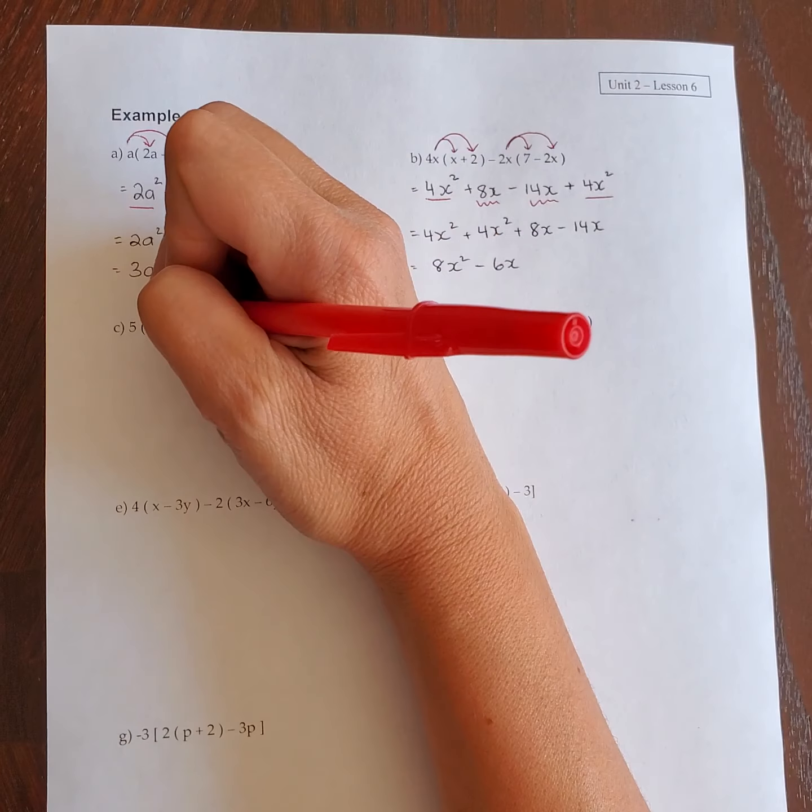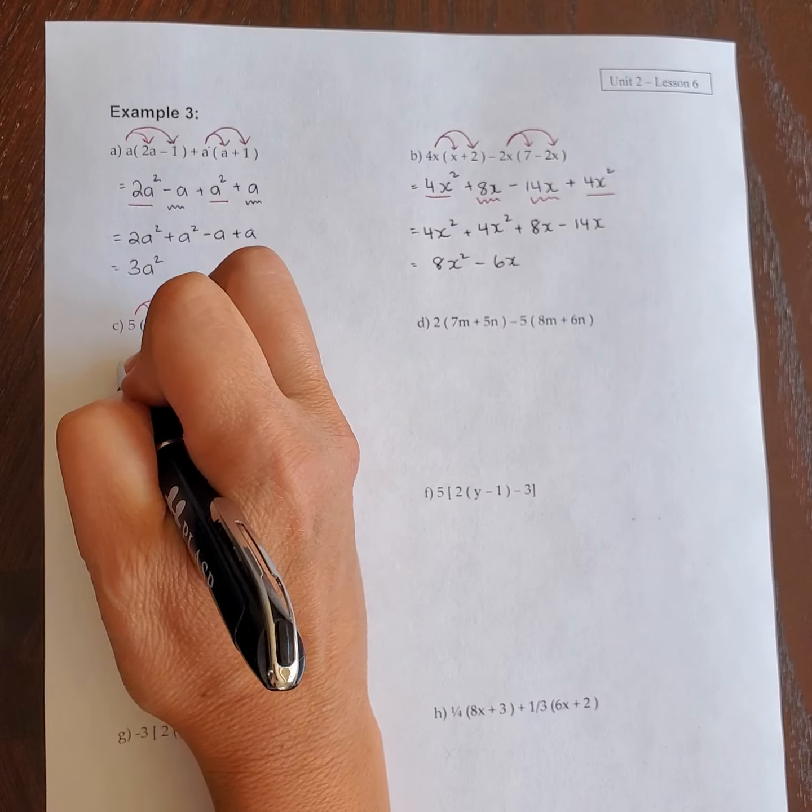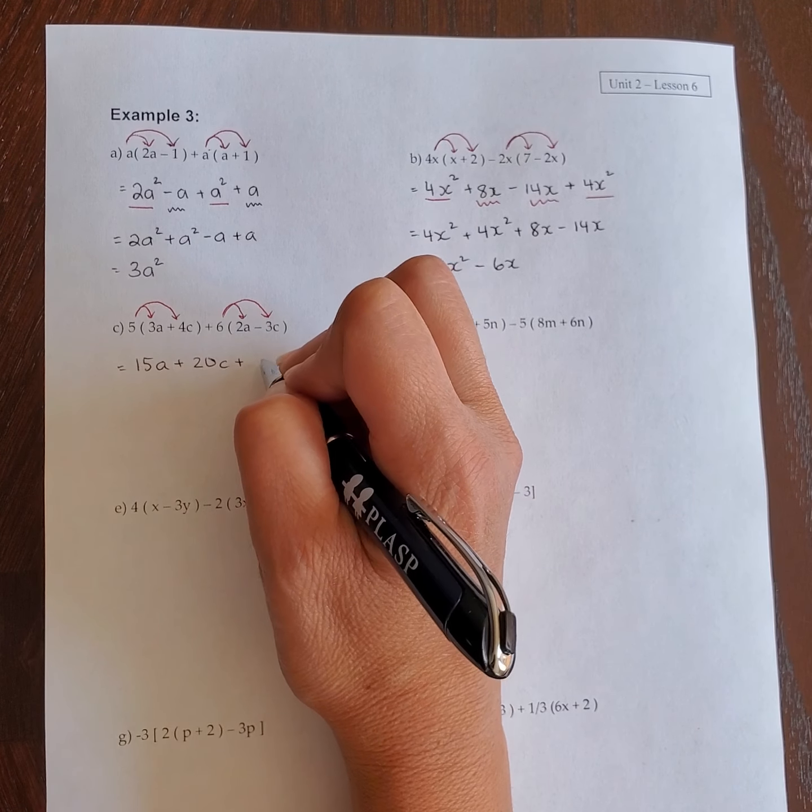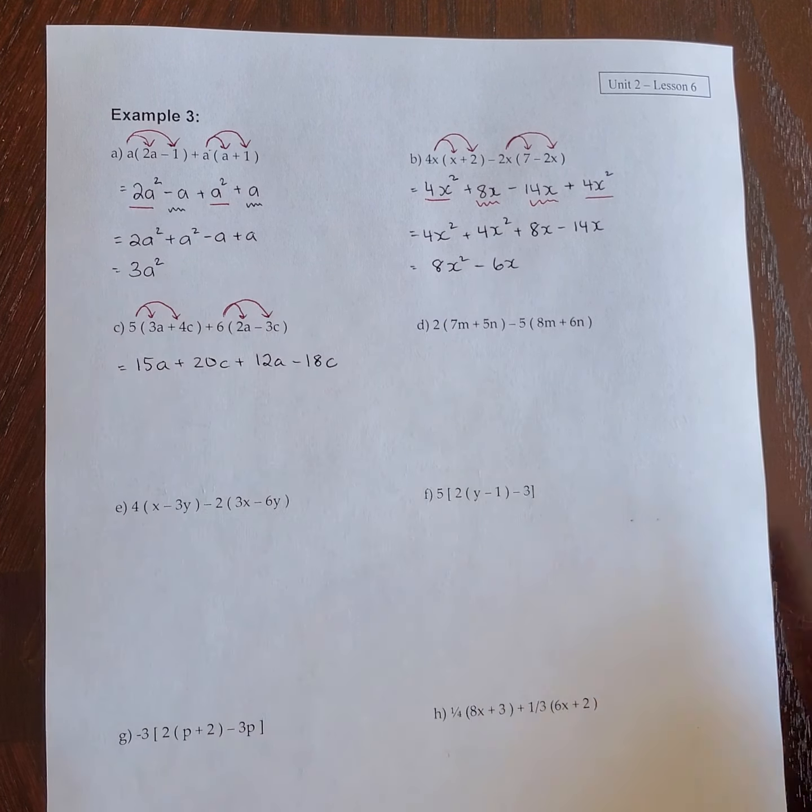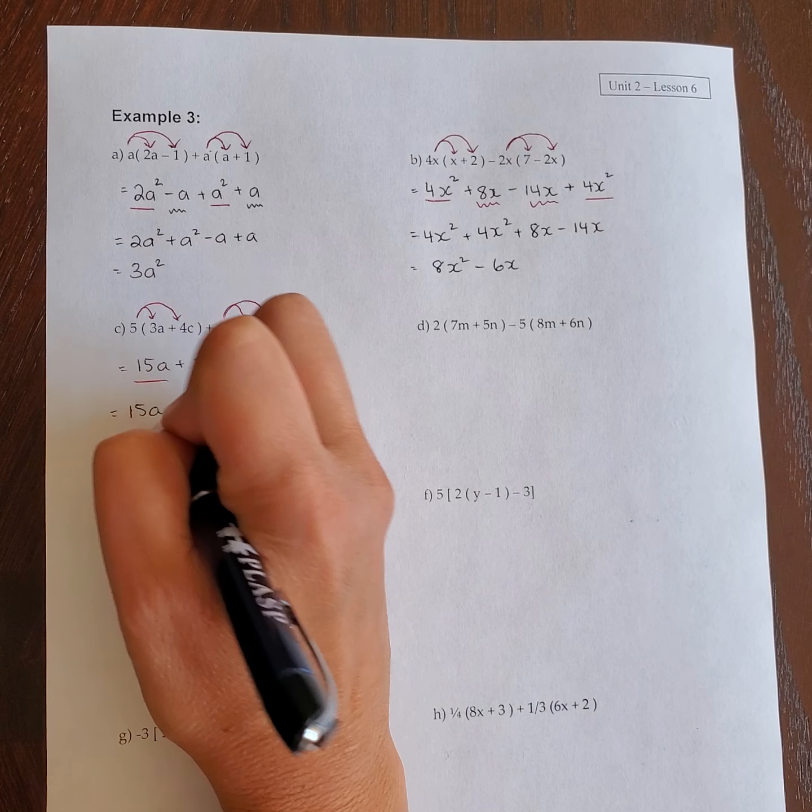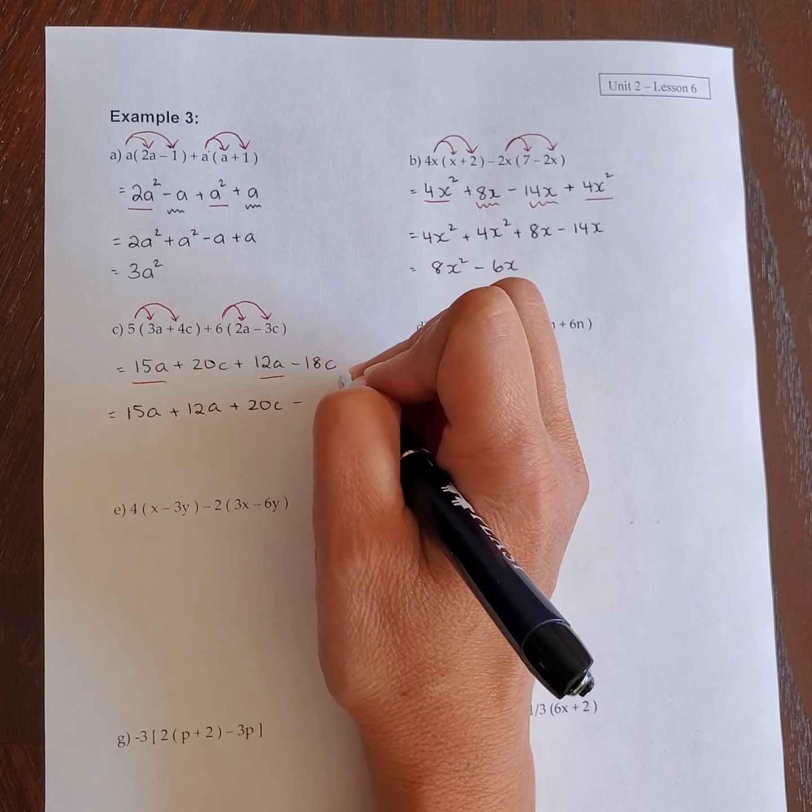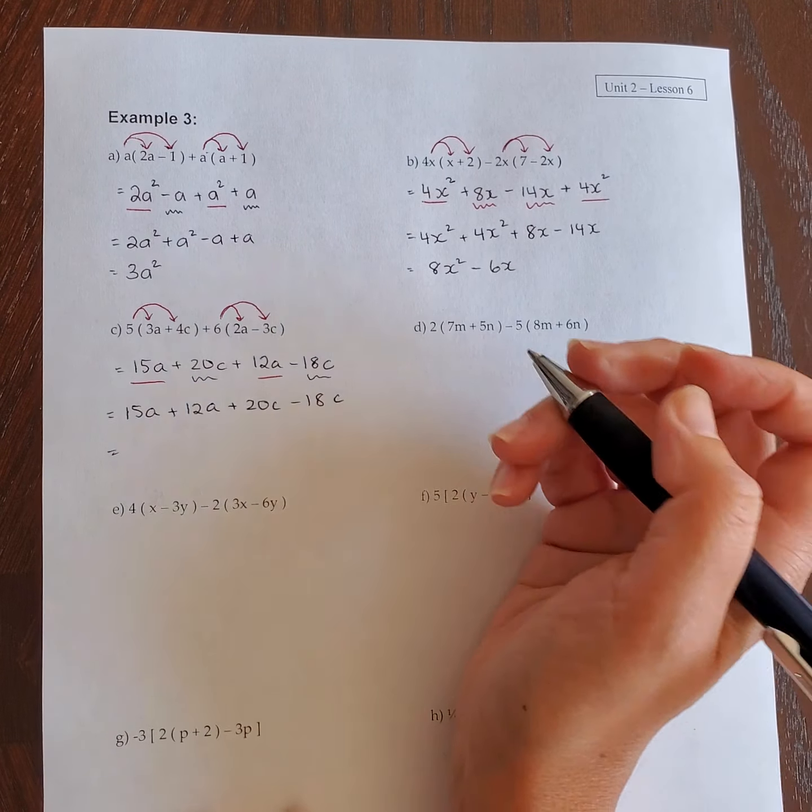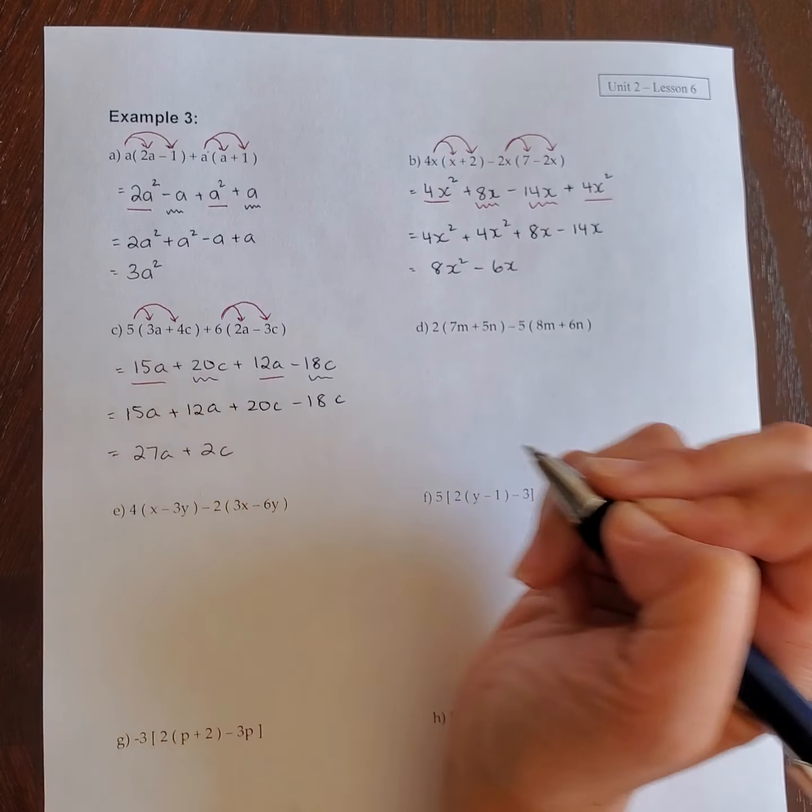I put in my arrows. The 5 goes to the first bracket, the 6 goes to the second bracket. That will give me 15a plus 20c. 6 times 2a is 12a, and that is minus 18c. Collect like terms. I've got two terms that have an a. So 15a plus 12a plus 20c. There's 20c and 18c, so those can be collected as well. So 15 plus 12 is 27, and then 20 take away 18 is 2c.